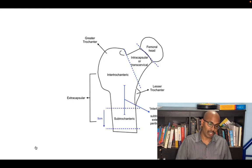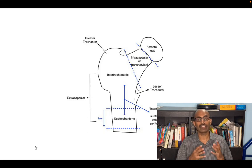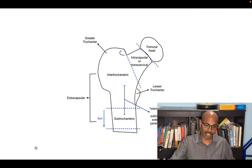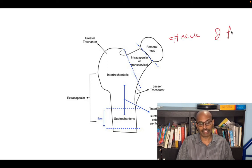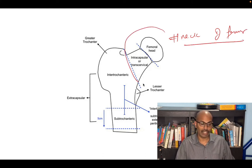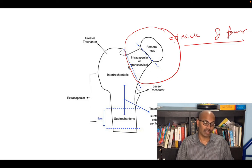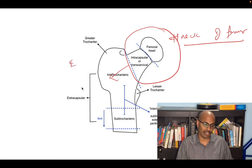So what are intracapsular fractures and what are extracapsular fractures? Intracapsular fractures are basically fracture neck of femur — fractures occurring inside the capsule of the hip joint. Fractures occurring outside the capsule are called extracapsular fractures, the most common of which is the intertrochanteric fracture.